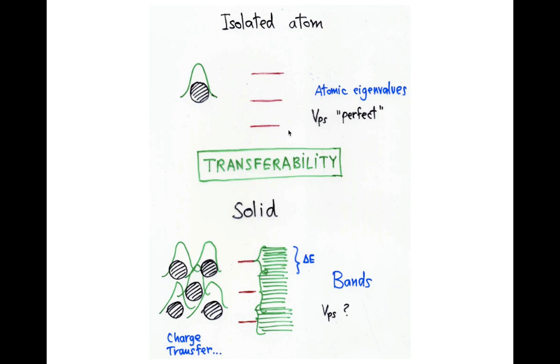in which you don't have sharp atomic eigenvalues, but you have bands. So something you fitted perfectly to an atomic eigenvalue, an atomic wave function, now needs to work for a range of energies around that.